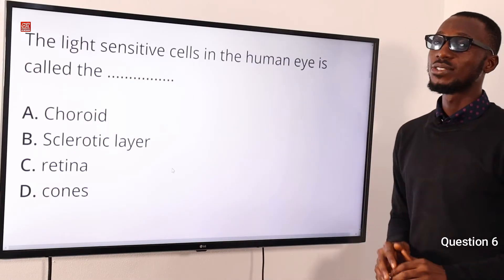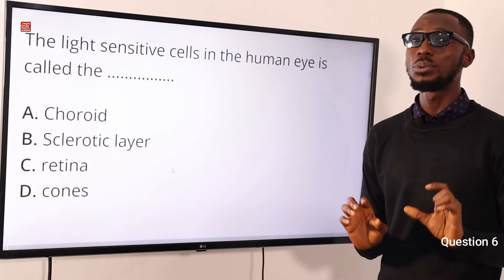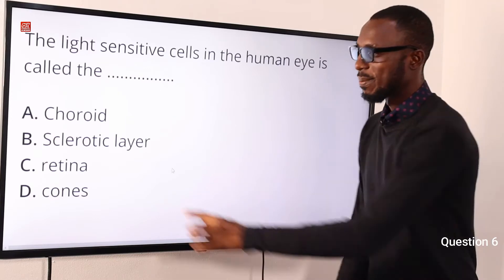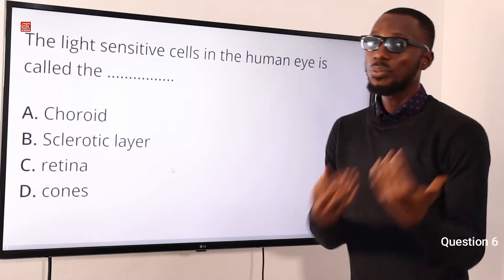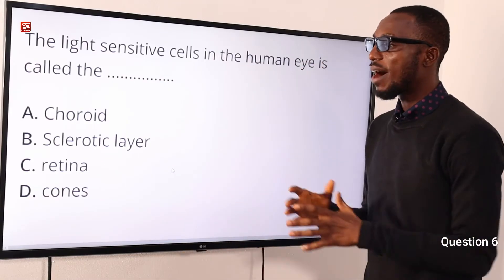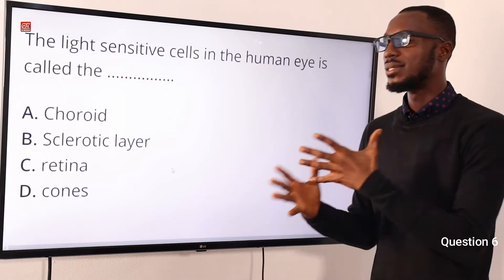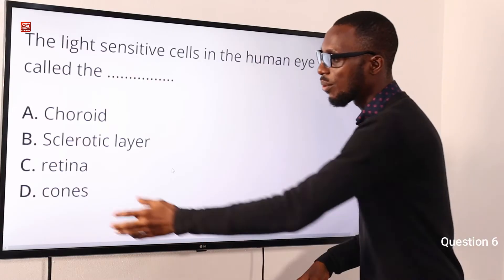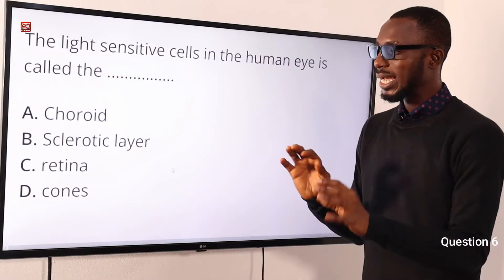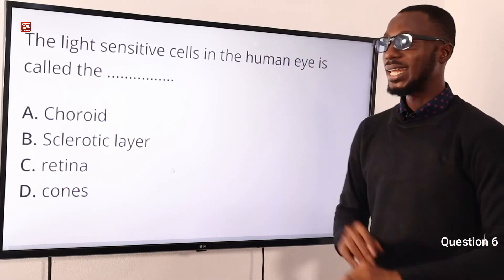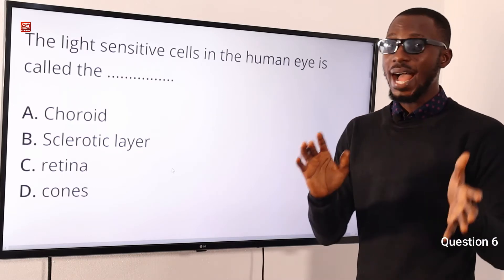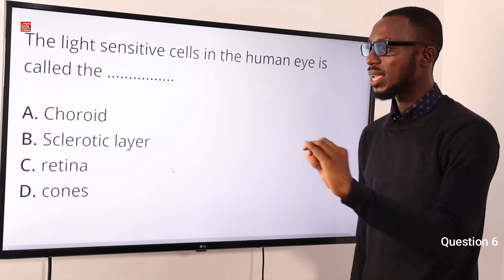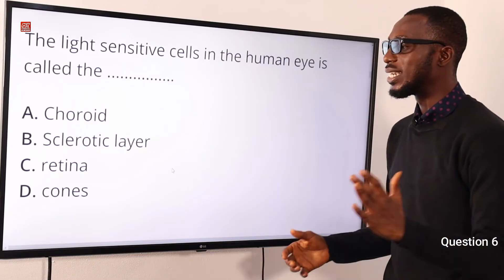Question 6. The light-sensitive cells in the human eye are called what? These sensitive cells are also known as photoreceptors. They are located in the retina. Talking about the layers of the eye: the outermost is the sclerotic, the middle is the choroid, and the innermost is the retina. It is in the retina that we have these photoreceptors — two types: the cones and the rods. The rods are responsible for black and white vision, including night vision. The cones handle color vision and are located in the yellow spot, the most sensitive part to light. The question asks about the light-sensitive cells specifically — not the part — so the correct option is option D for cones.